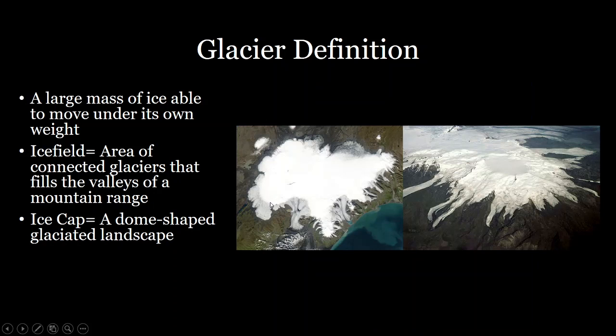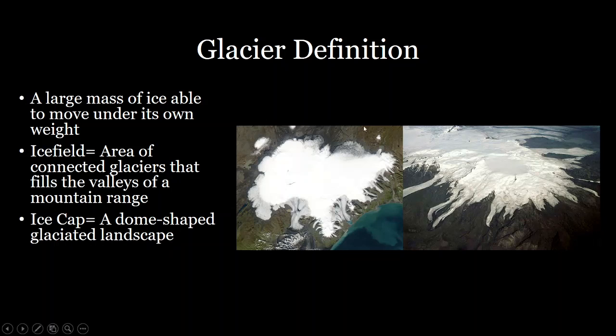The next larger type of glacier is an ice cap. An ice cap is a dome-shaped glaciated landscape. You can see an example in Iceland — this is an area of glacier so large that it's covering those peaks as well, covering the entire mountainous area of that region.